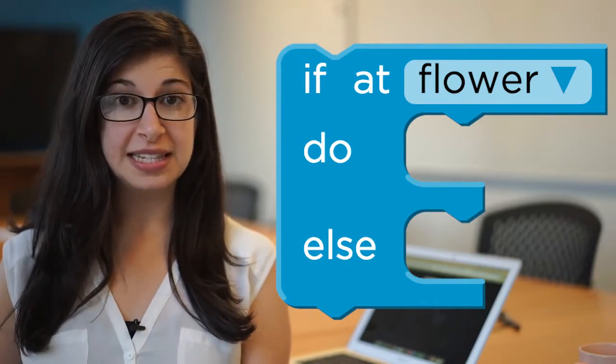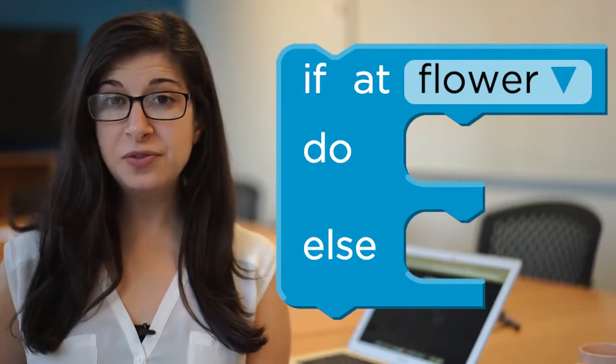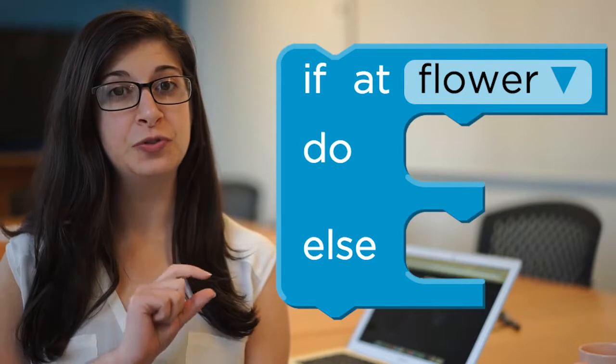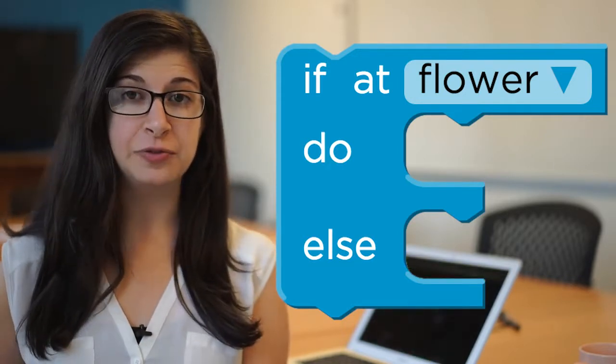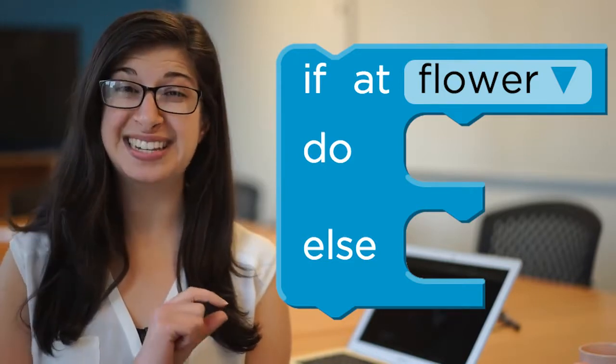The if-else block lets the bee make a decision between two sets of actions. If the bee is at a flower, the bee will do the set of actions you put in the first part where it says do. If the bee is not at a flower, the bee will do the set of actions you put in the slot where it says else.